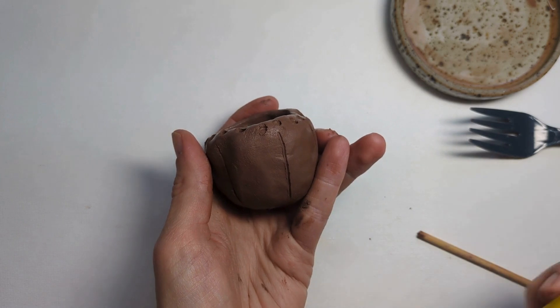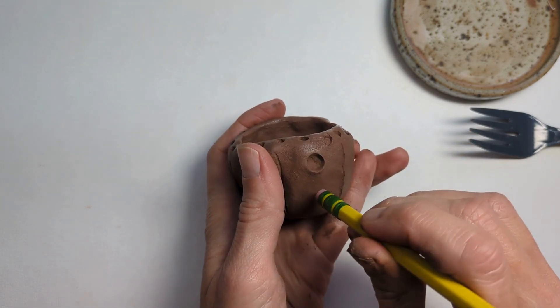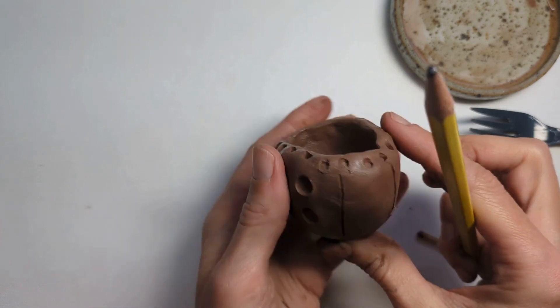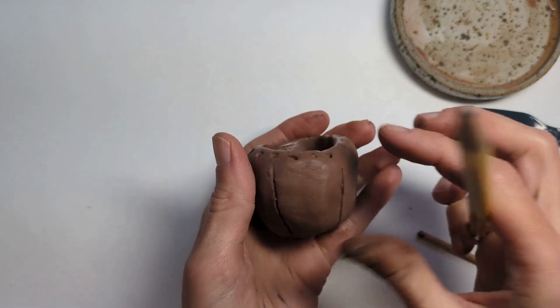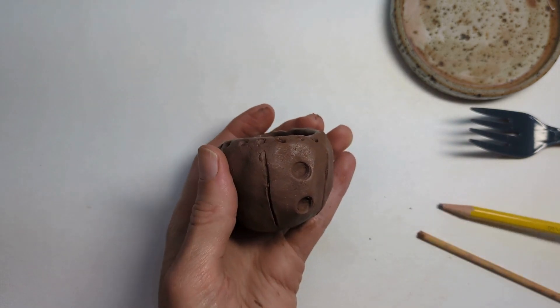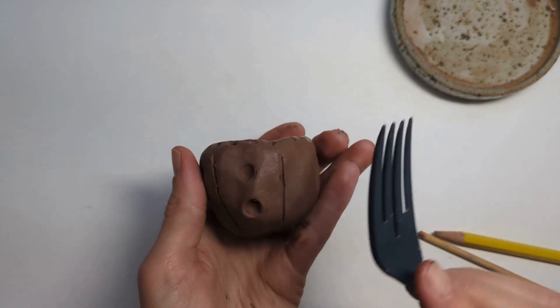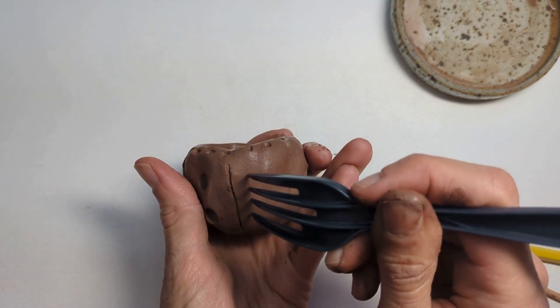I could also use my pencil, maybe the end of my eraser, to press in the clay. Or I could use the fork. I could press things going this direction or I could make them going up and down with these thinner very little dots.